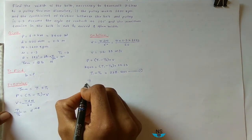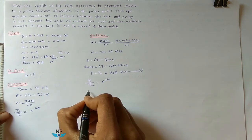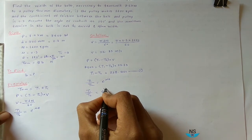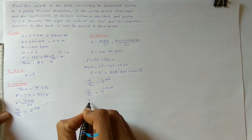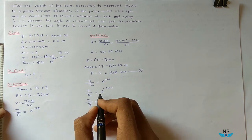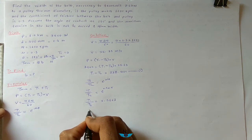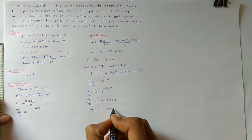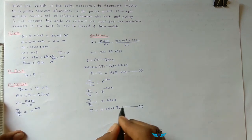Now take the tension ratio. T1 divided by T2 equals e raised to mu times theta, that is e raised to 0.3 times pi. The tension ratio becomes T1 divided by T2 equals 2.5663. So T1 equals 2.5663 times T2. This is the second equation.